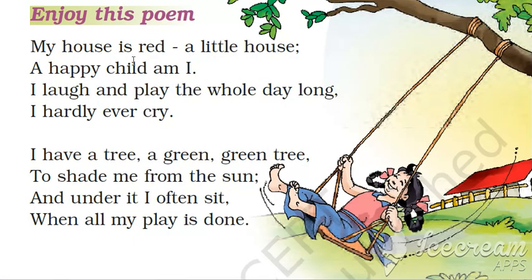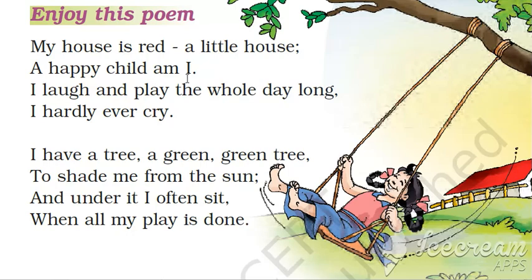My house is red, a little house, a happy child am I. Is line mein bacha khush kya raha hai — My house is red, mera lal rang ka ghar hai. House means ghar, woh kaisa hai? Kaun se color ka hai? Red — lal rang ka. A little house — woh house kaisa hai? Little means thoda. A happy child am I — mein kaisa bacha hoon? Mein ek khush mizaj bacha hoon jo ki abhi khush hai.